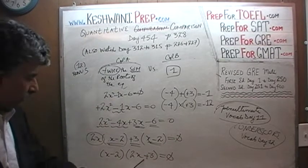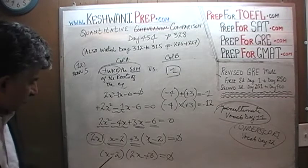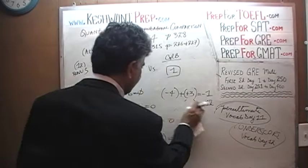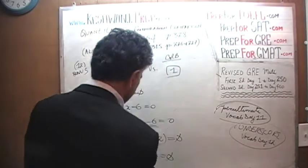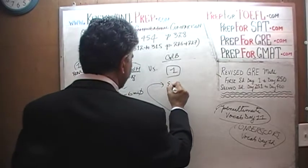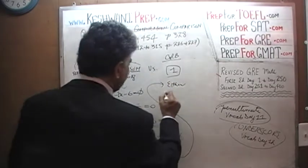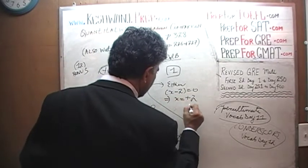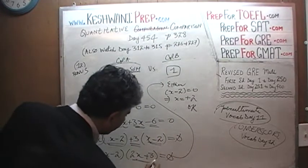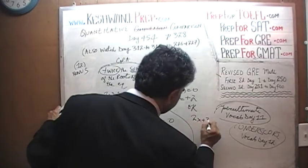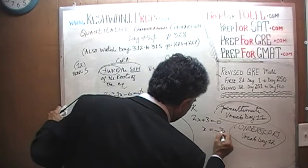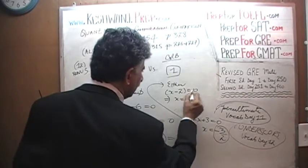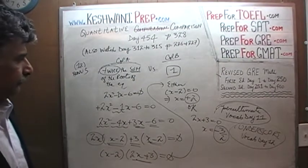Either x minus 2 equals zero, which implies x equals positive 2, or 2x plus 3 equals zero, which implies x equals negative 3 over 2. Those are our roots: negative 3 over 2 and 2.